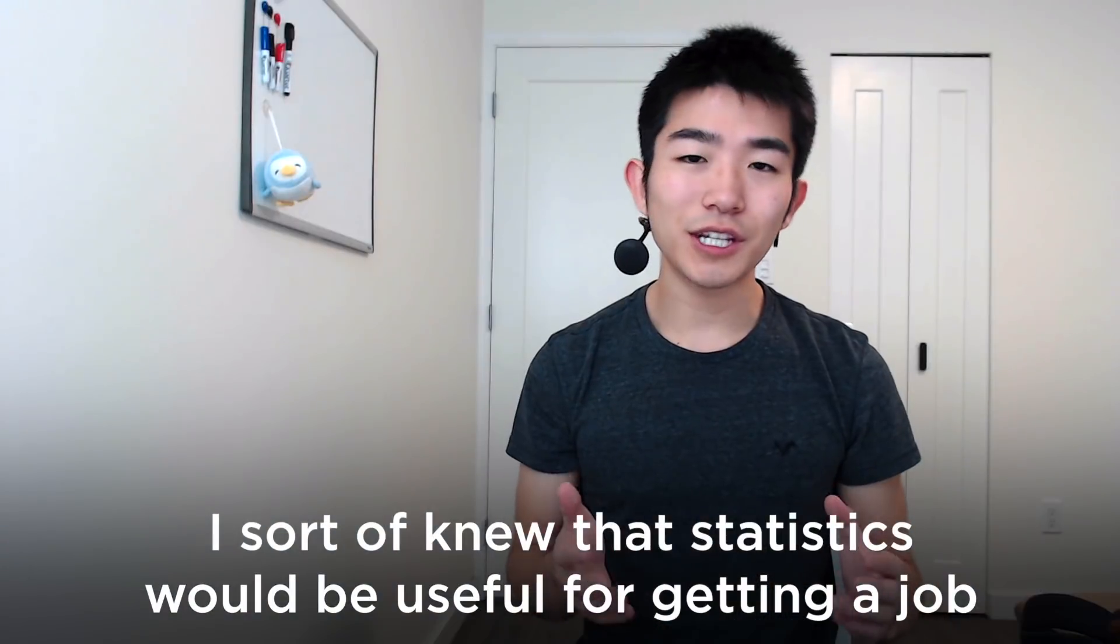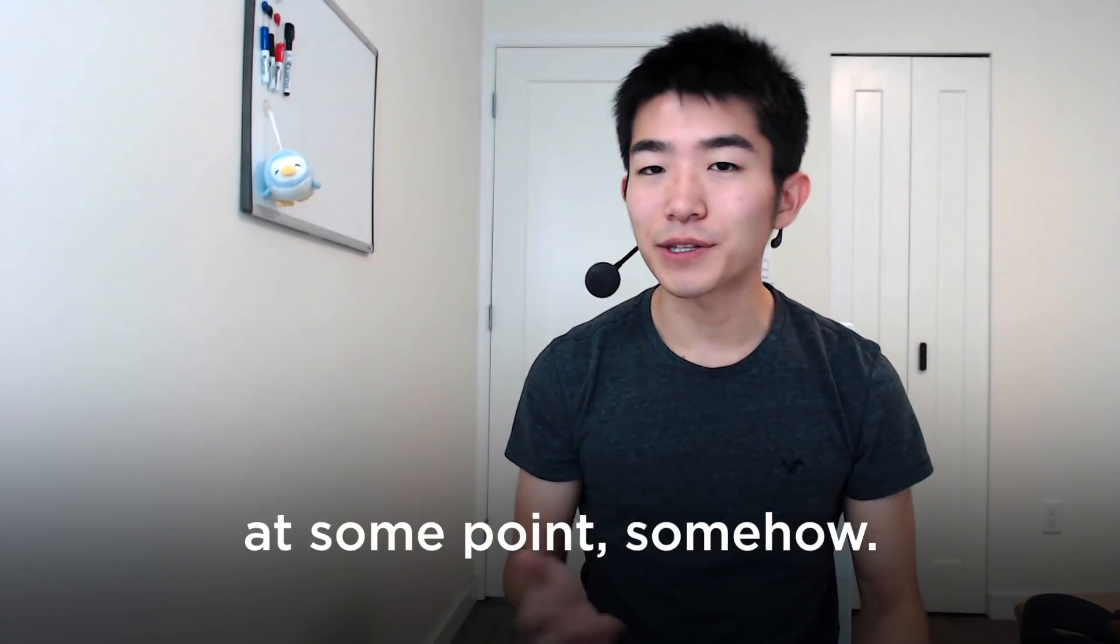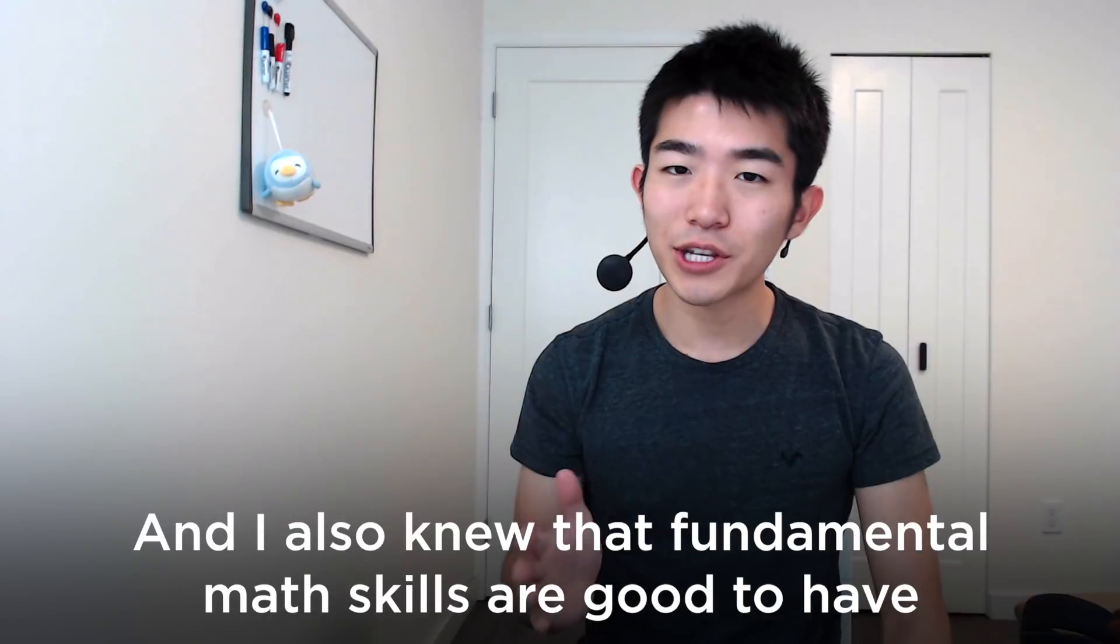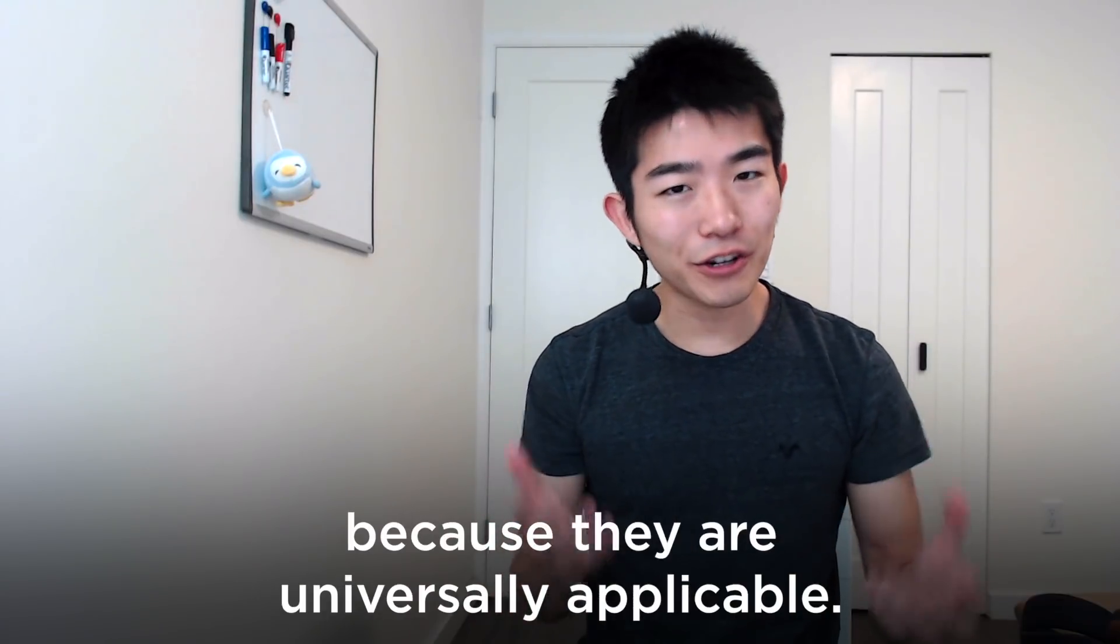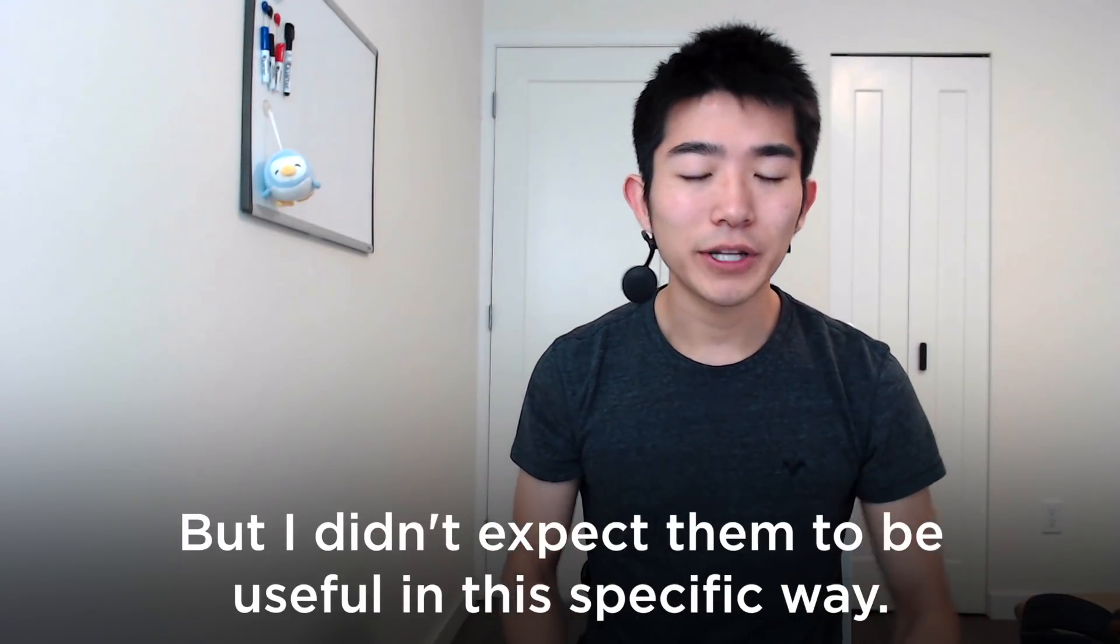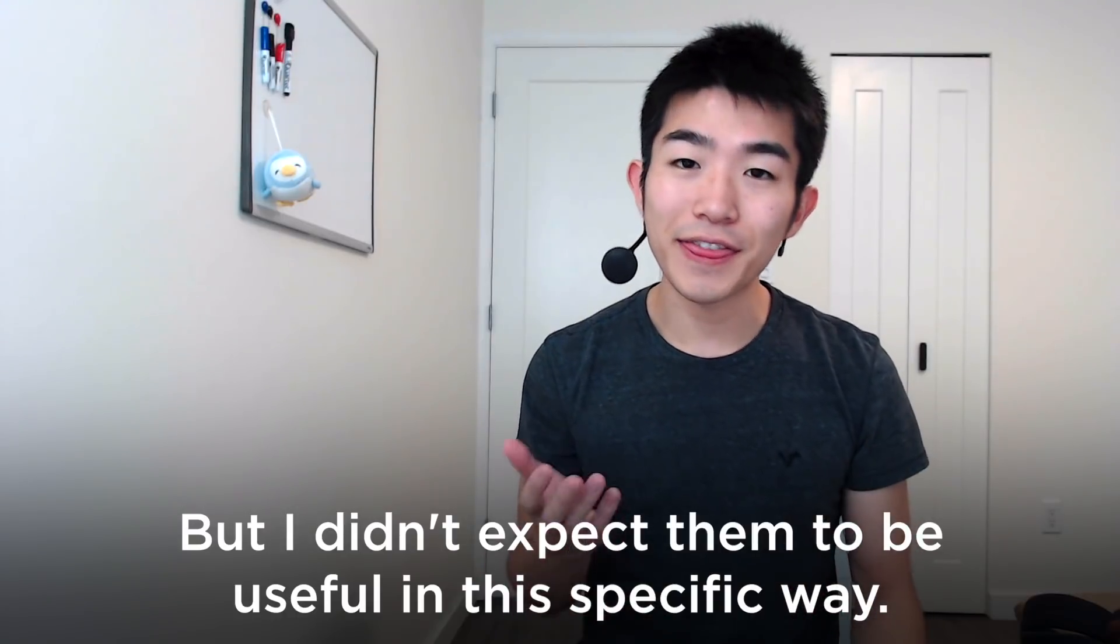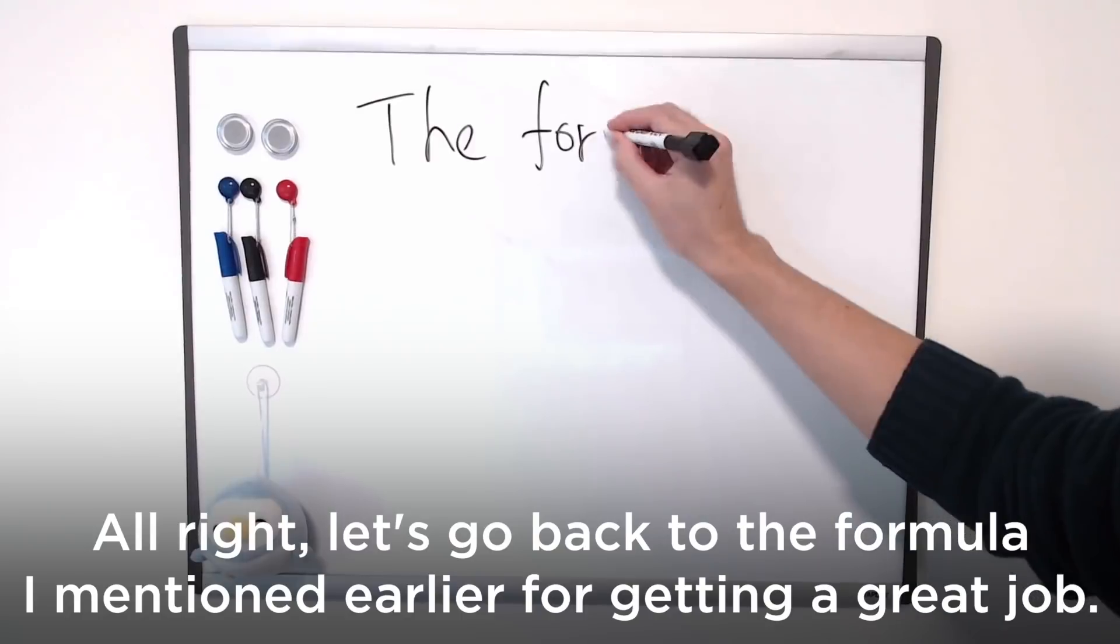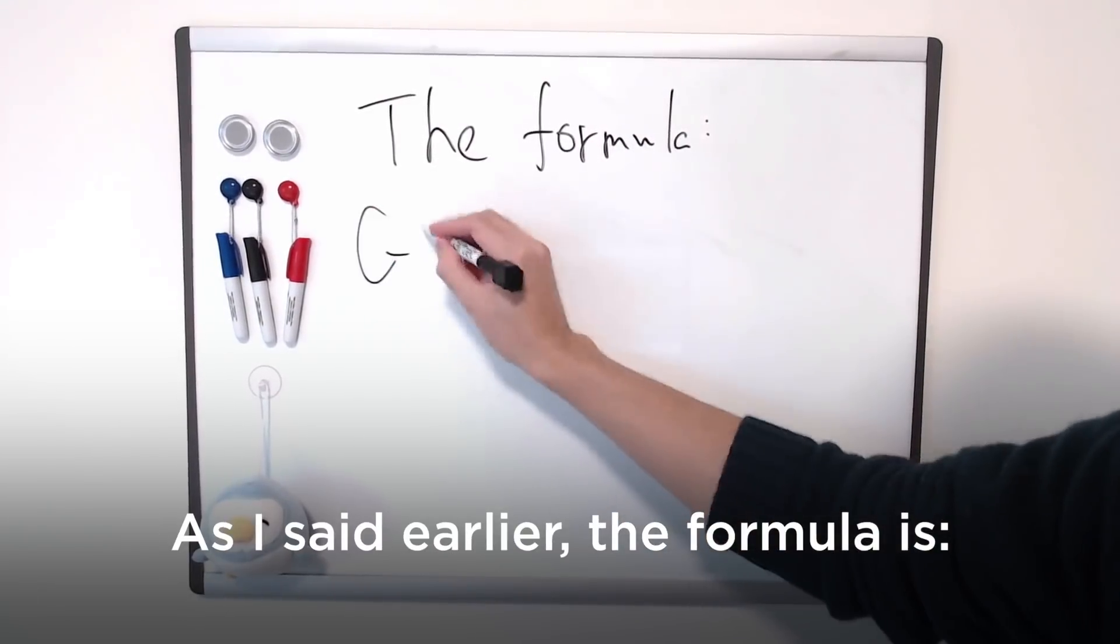I sort of knew that statistics would be useful for getting a job at some point somehow. And I also knew that fundamental math skills are good to have because they're universally applicable. But I didn't expect them to be useful in this specific way. Alright, let's go back to the formula I mentioned earlier for getting a great job. As I said earlier, the formula is getting a great job is equal to skills plus something else.